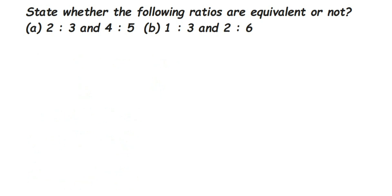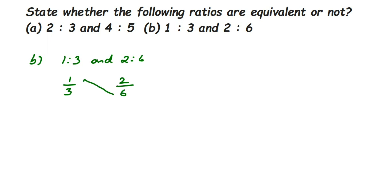The second question: I'll show the easy method first. We have 1 is to 3 and 2 is to 6, written as 1/3 and 2/6. Cross-multiplying: 6 multiplied with 1 is 6, and 3 multiplied with 2 is 6. Since both products are equal, these ratios are also equal.